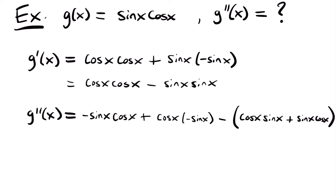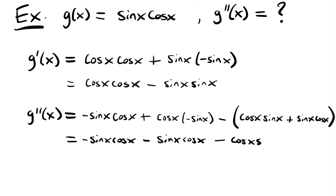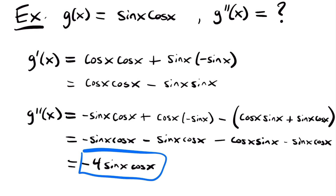Distributing the negative and simplifying, this equals negative sine x cosine x minus sine x cosine x, minus cosine x sine x minus sine x cosine x. Notice that all four terms are the same — it doesn't matter what order you multiply, they're all sine x cosine x. So we actually have four like terms, and we can simplify this to just negative 4 sine x cosine x. That's a really nice result: the second derivative of sine x cosine x is negative 4 sine x cosine x.